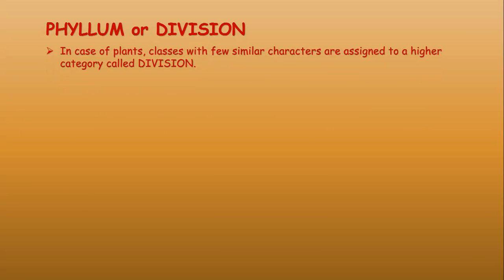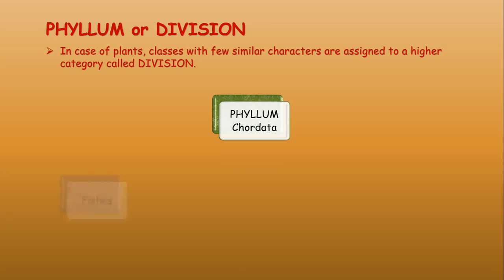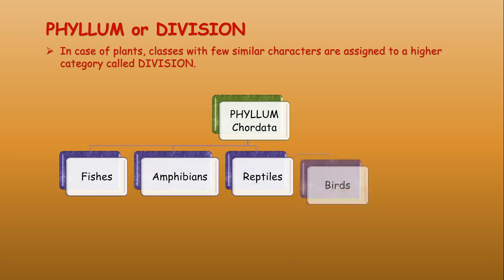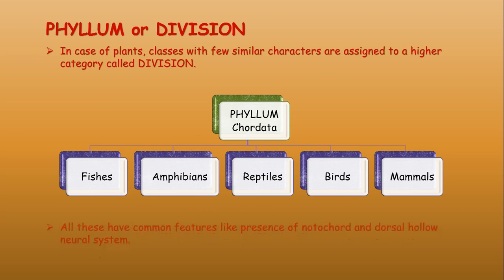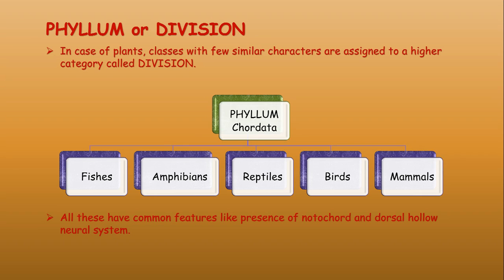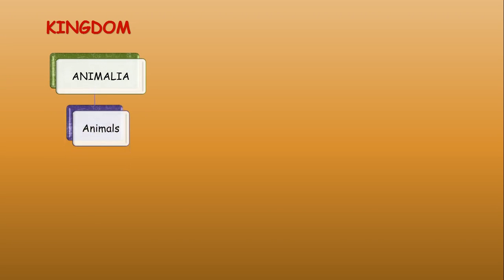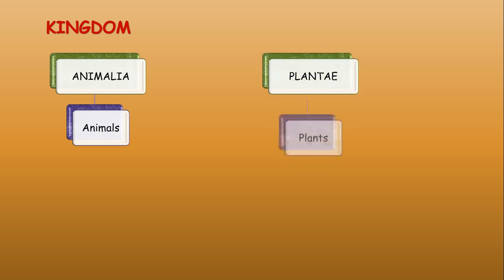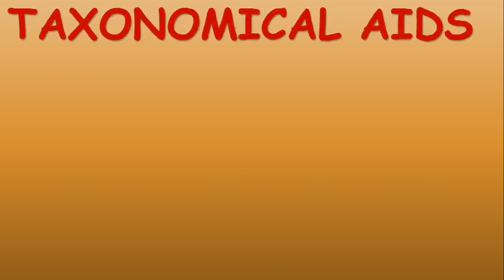Phylum (for animals) or division (for plants) groups classes with a few similar characters into a higher category. An example is the phylum Chordata, which includes fishes, amphibians, reptiles, birds, and mammals, as all have common features like the presence of a notochord and a dorsal hollow neural system. The topmost category is the kingdom — Animalia for all animals and Plantae for all plants.